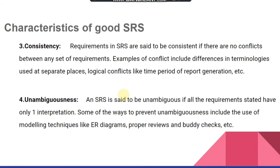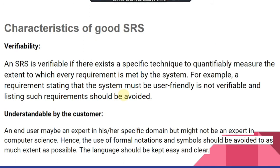Another characteristic of a good SRS is verifiability. Verifiability is the way in which we verify the user needs — that the user expected certain functionality and we have verified it will be provided by the system. An SRS is verifiable if there exists a specific technique to measure the extent to which a requirement is met. For example, a requirement stating 'the system must be user friendly' is not verifiable and such requirements should be avoided.